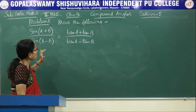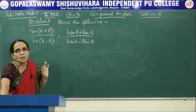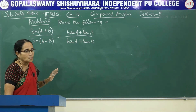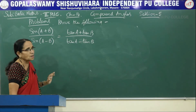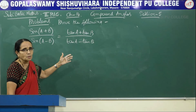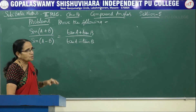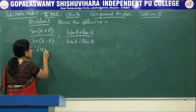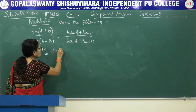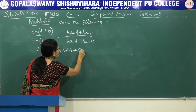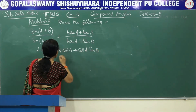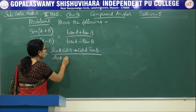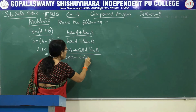We know that tanθ equals sinθ/cosθ. Remembering this basic information and using the expansions of sin(A+B) and sin(A-B), we have to do some manipulation to arrive at the right hand side. A little bit of thinking is needed here — it is not as direct as the earlier problems.